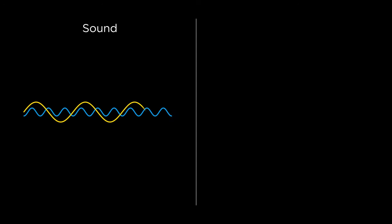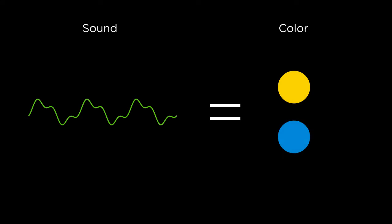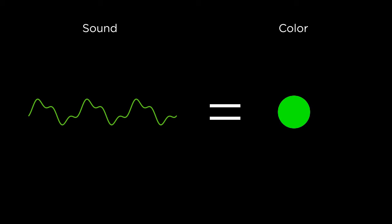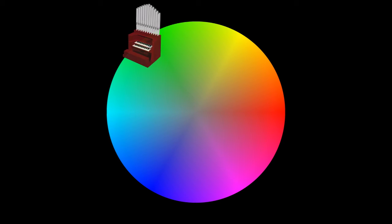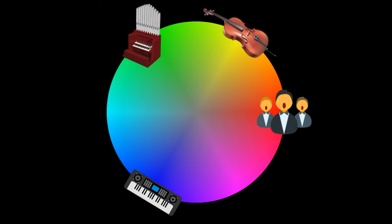The color sonification module is based on the idea that sounds can be mixed similarly to colors. Therefore, we map each value of the color space to an appropriate counterpart within the sound space. For example, red is represented by a choir, yellow by a cello, green by an organ, and blue by a synthesizer.